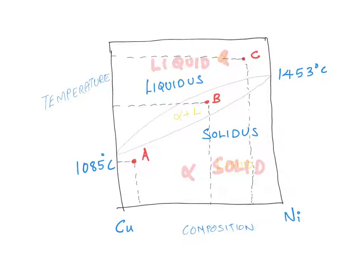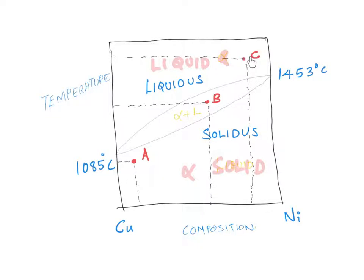Now, what are the different phases present for a system corresponding to point B? There are two phases: one is liquid and the other is solid. I'm just interested in figuring out the number of phases present, not the composition yet. Moving to point C at a different temperature and different alloy composition - the number of phases present is again only one single phase, and that is the liquid phase.